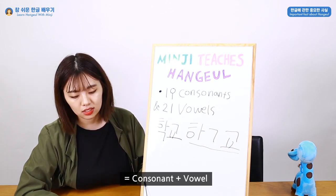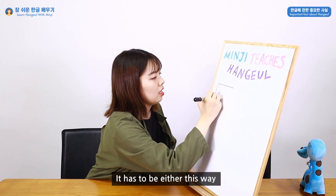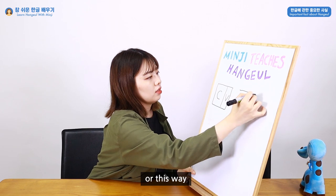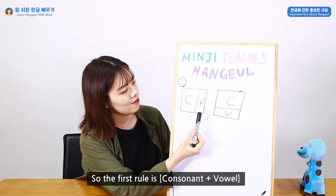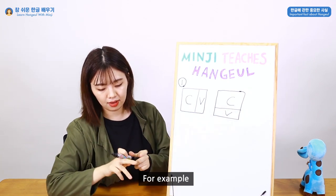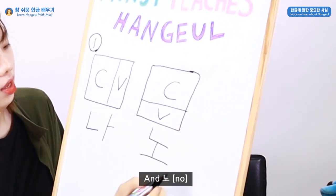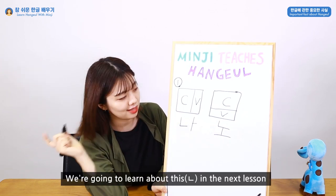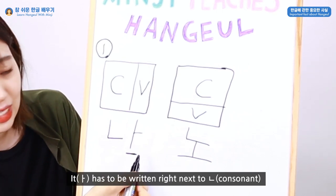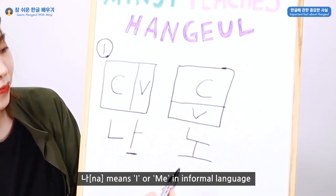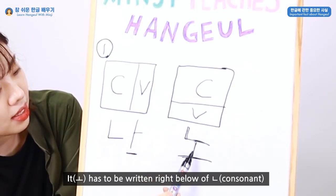The first combination rule is Consonant plus Vowel. It can be arranged either side by side horizontally, or the vowel can go below the consonant vertically. For example, 나 — this is a consonant and this is a vowel, written right next to it. It means 'I' in informal language. And 노 — written with the vowel below the consonant. It means 'or' or 'a paddle.' We'll learn more about these letters in the next episode.